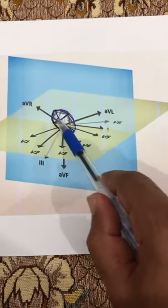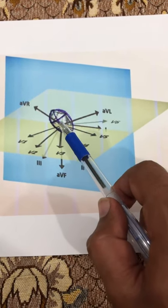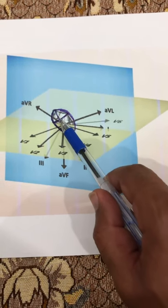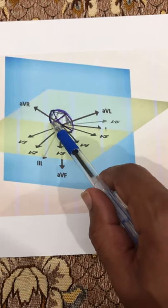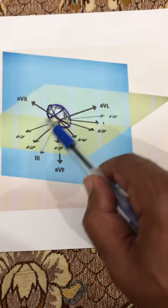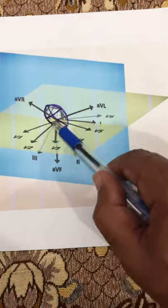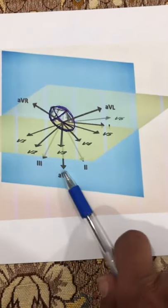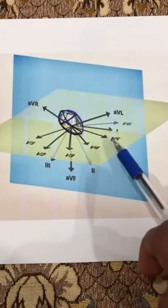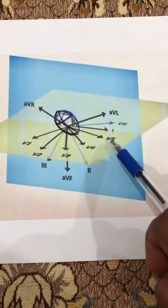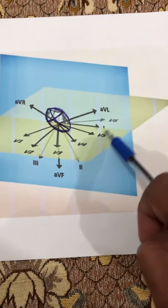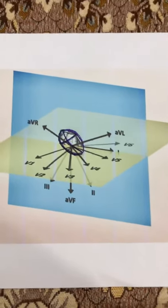V1 is looking at the septum, especially the interventricular septum. I've drawn this heart a little above the proportion — it should be a bit lower. V1 and V2 are also looking at the atria. V3 and V4 are looking at the anterior wall of the heart. V5, V6, and aVL are looking at the lateral wall of the heart.